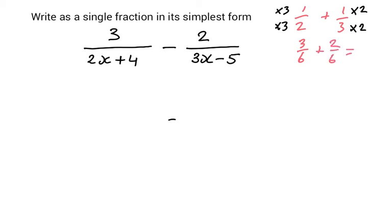And now the denominators are the same, so I can perform the addition. I add the numerators, 3 plus 2, 5 over 6. Okay, now a similar thing happens when you're talking about algebraic fractions. So I have to find a common multiple.